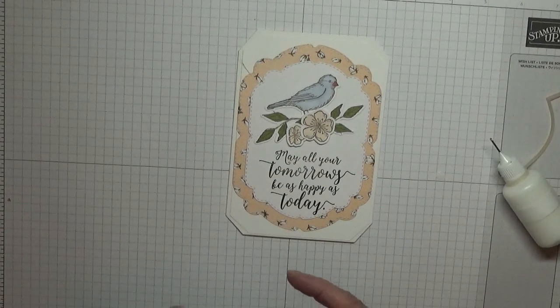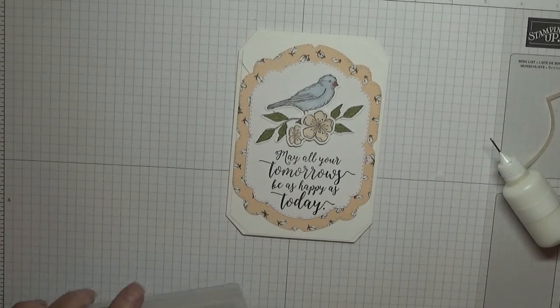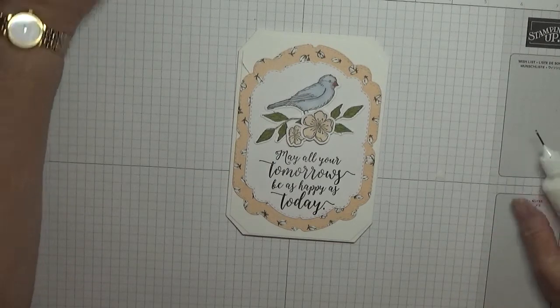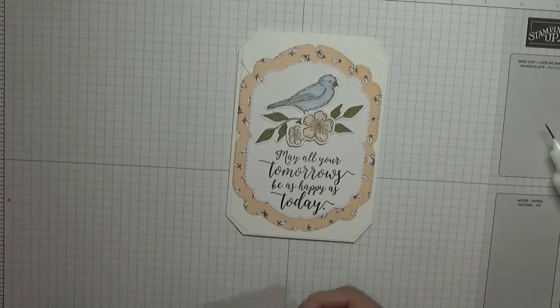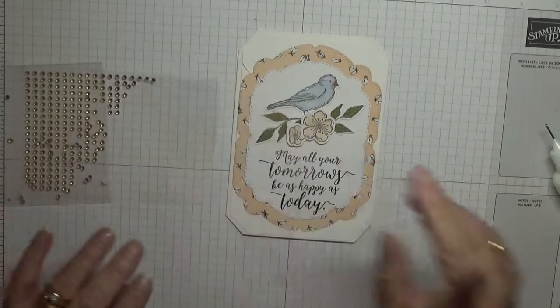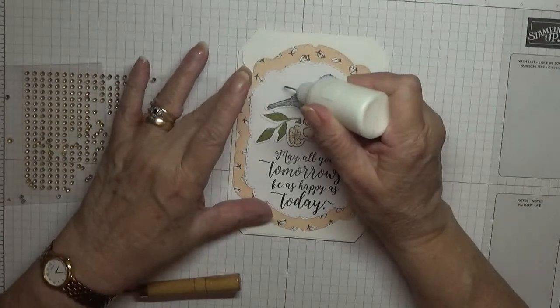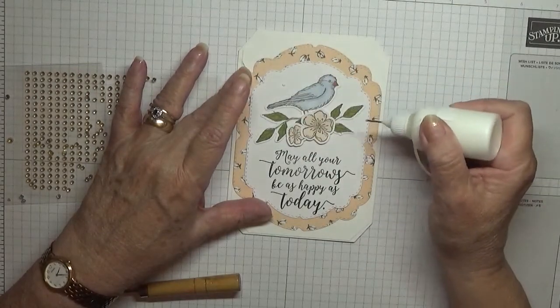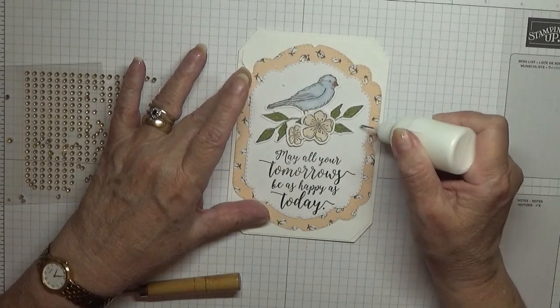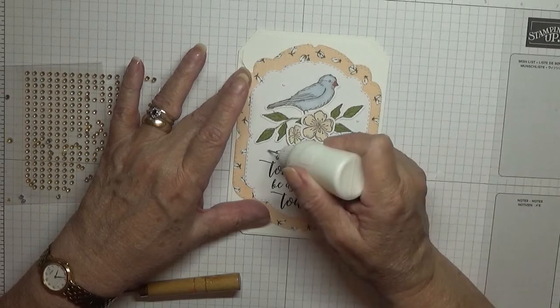And that will just leave us some gems to put on. I've got some gold gems here I'm going to use instead of silver. So we're going to put one there, one there, and one there.